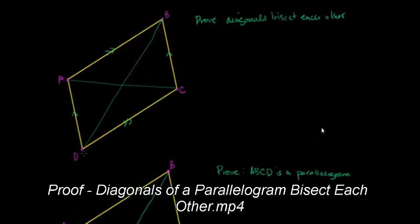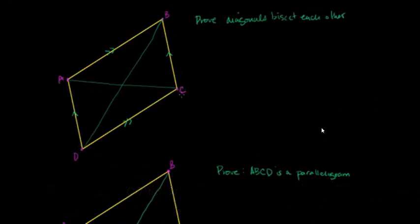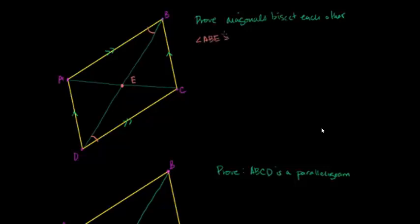We have a parallelogram right over here, and what I want to prove is that its diagonals bisect each other. These aren't just diagonals — they are lines intersecting parallel lines, so you can also view them as transversals. Focusing on DB, it intersects DC and AB. Since those are parallel, alternate interior angles must be congruent. Let me label the midpoint E. Angle ABE must be congruent to angle CDE by alternate interior angles of a transversal intersecting parallel lines.